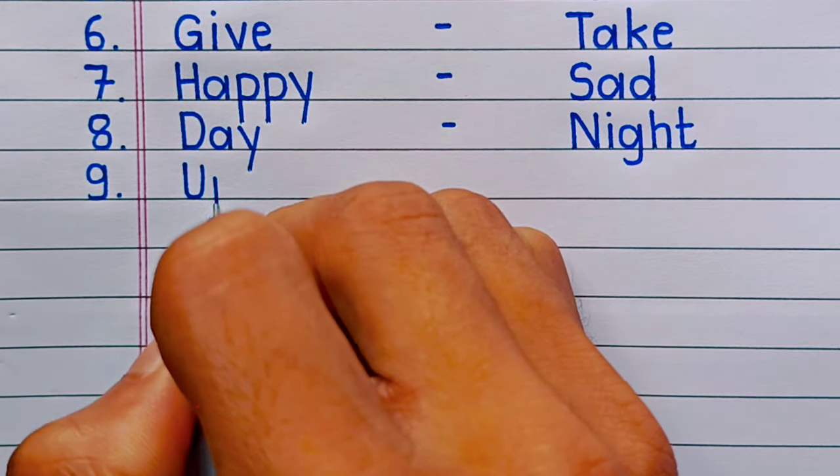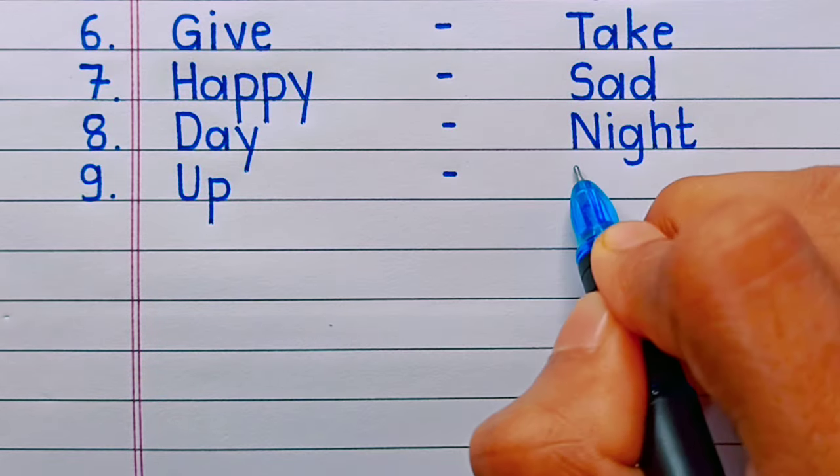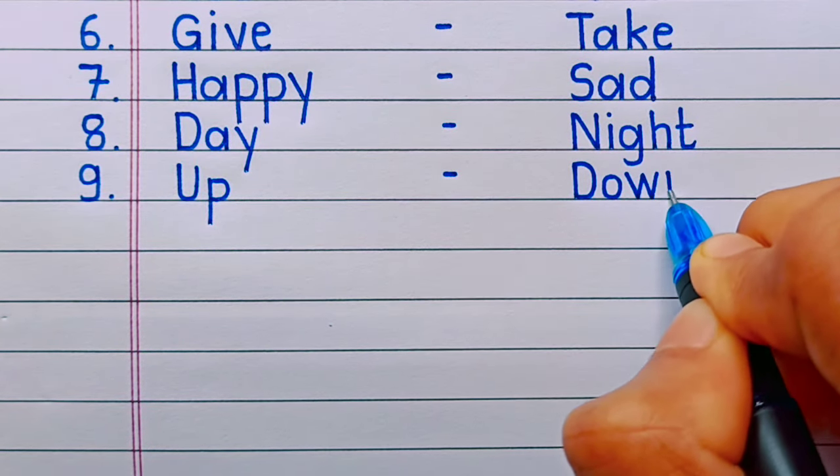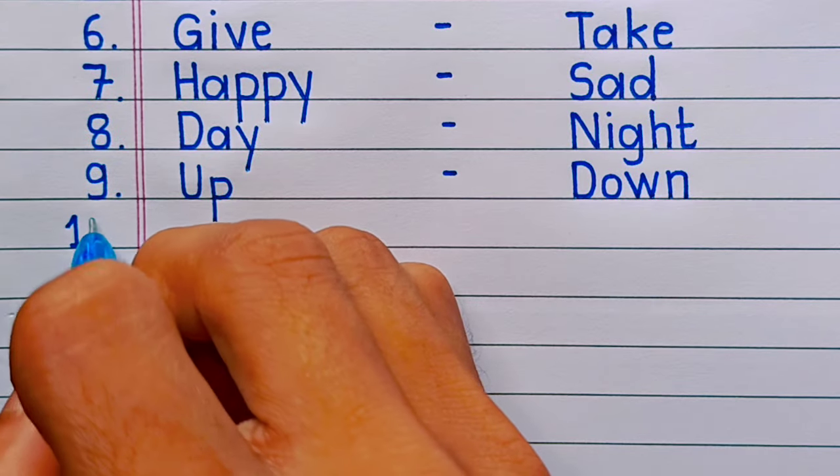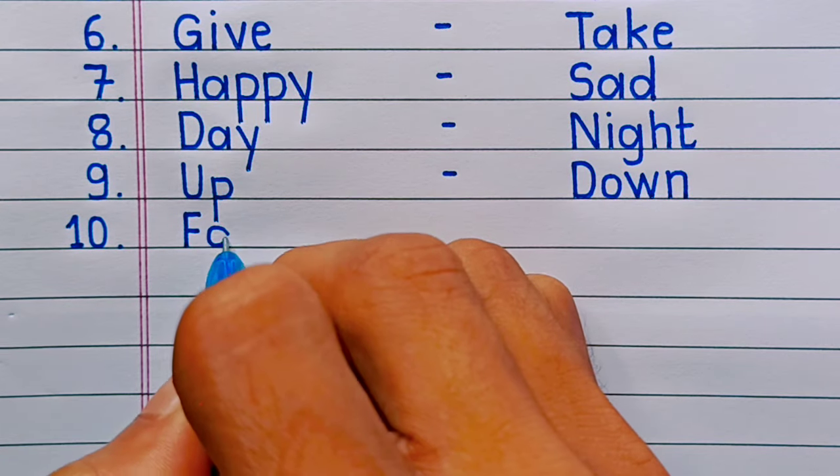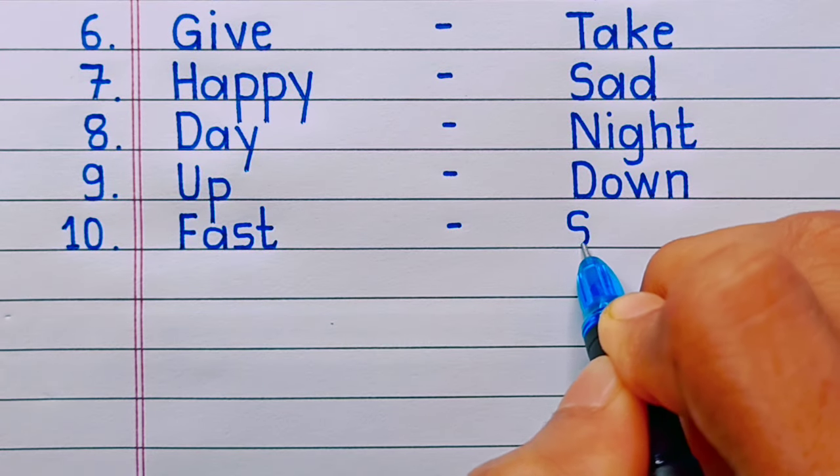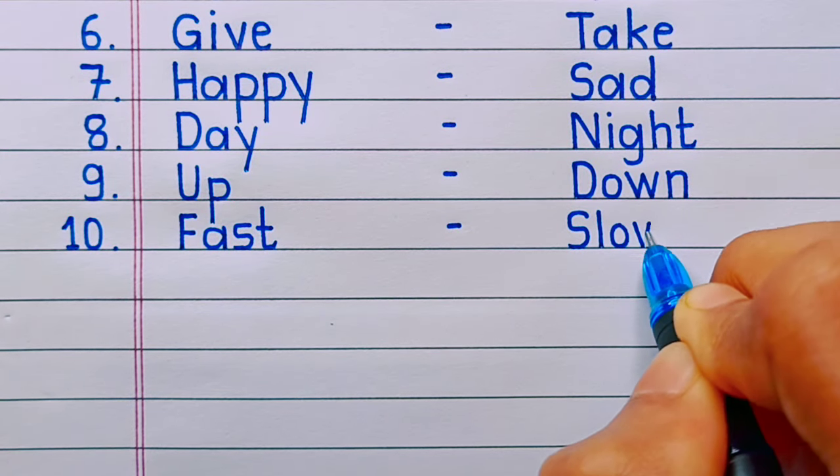Number nine: up, down. Number ten: fast, slow.